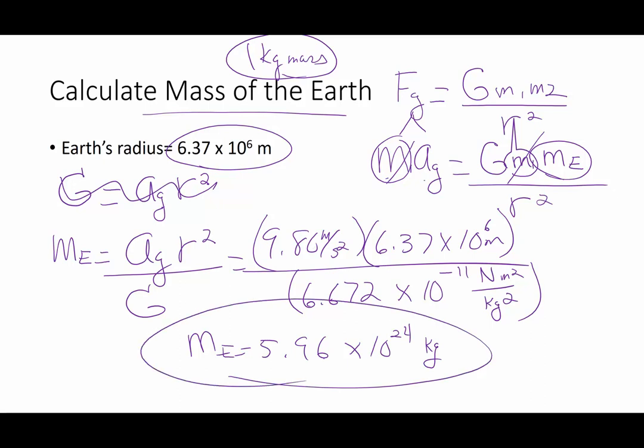And that was the first time that we were actually able to mass the Earth. And once we have massed the Earth, well, then we can calculate the mass of the Sun. And once you have the mass of the Sun, you can calculate Mercury and Venus and Jupiter and Saturn and so forth. All right. We will see you next time. Bye.